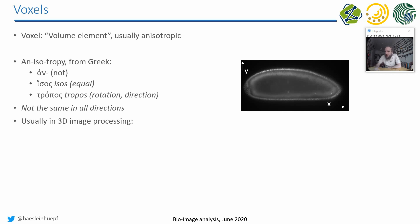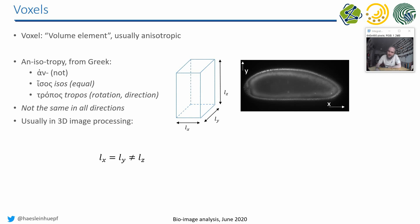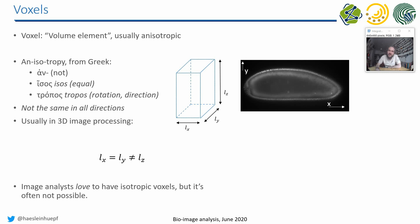For example, one micron wide and one micron high. In three-dimensional image processing, the third dimension — Z — is in many cases, in microscopy and in medical imaging, not as large as X and Y. The voxel size in Z is usually really different, meaning it is not isotropic: it does not have the same size in all three dimensions, and is usually different in Z.